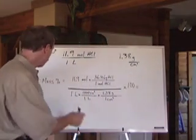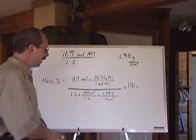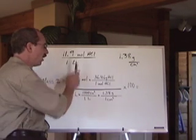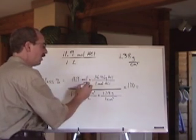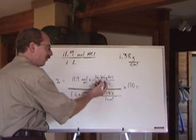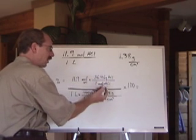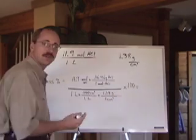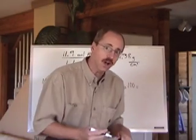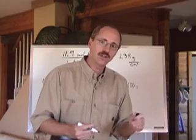Unit cancellation all the way. Your mass percent is going to equal - now you've got 11.9 moles of HCl. Moles of HCl times the molar mass of HCl - I get the moles of HCl to cancel and I'm left with the grams of HCl. That's the mass of the solute. But what's the mass of the solution?